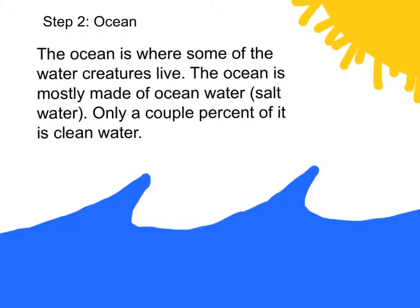Step 2: Ocean. The ocean is where some of the water creatures live. The ocean is mostly made of salt water. Only a couple percent of it is clean water.